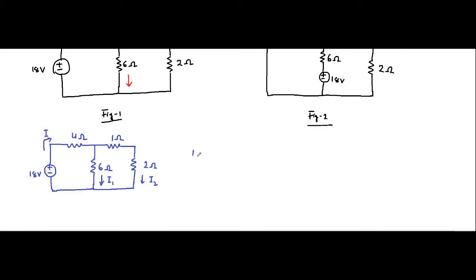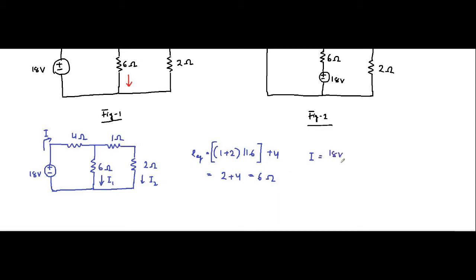The equivalent resistance: 1 ohm and 2 ohm are in series; their resultant is in parallel with 6 ohm, and that combination is in series with 4 ohm. So it is 3 parallel with 6, which is 18 by 9, which is 2 ohm. Then 2 plus 4 is 6 ohm. So current I equals 18 volt by R equivalent, which is 18 by 6, equal to 3 ampere.